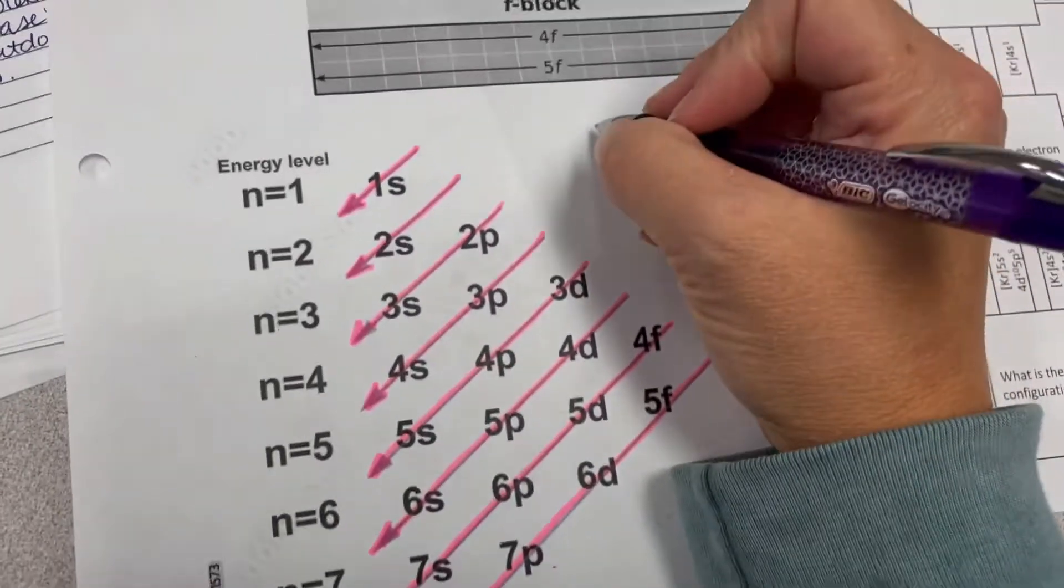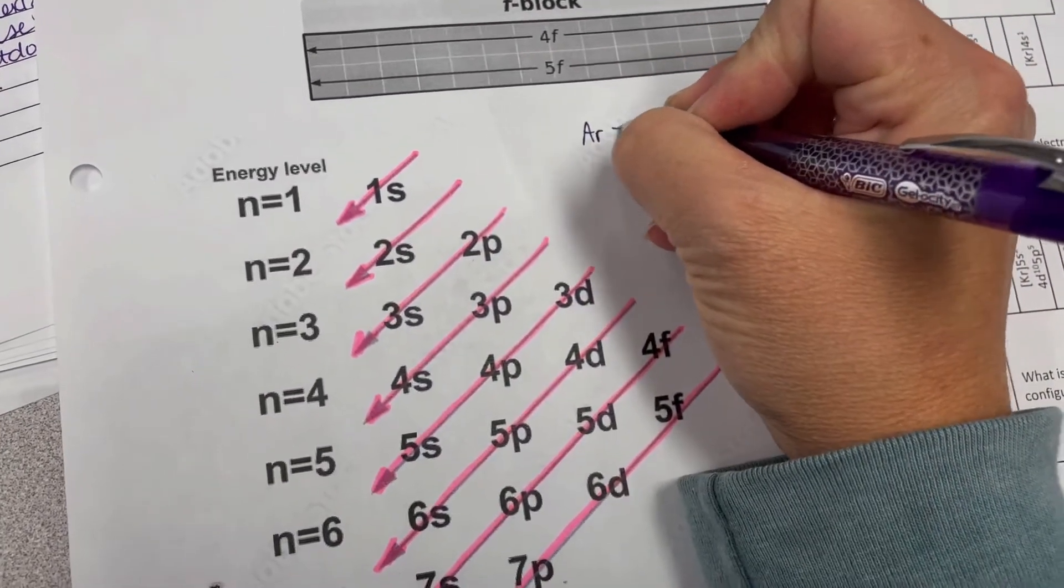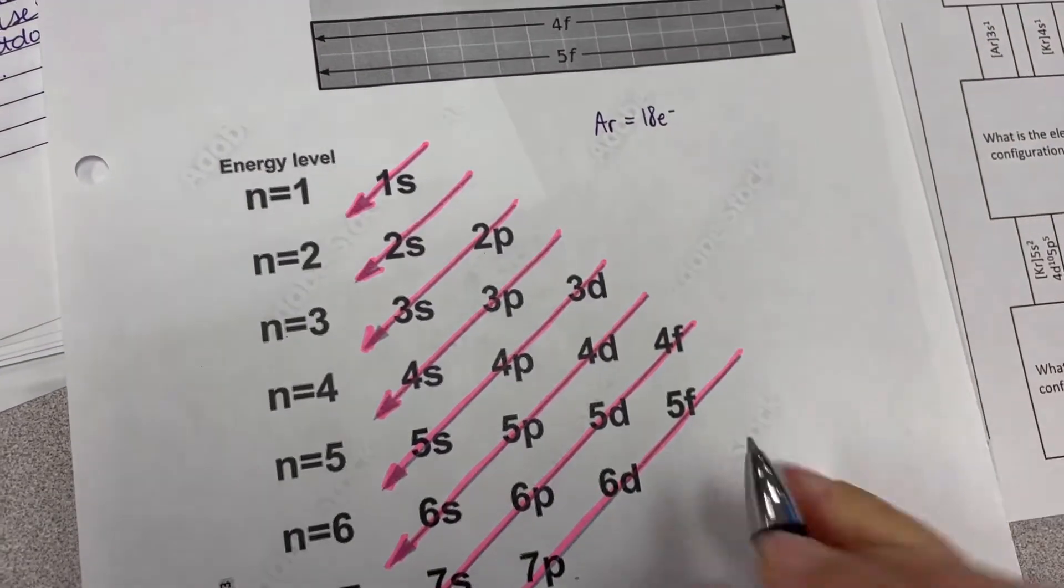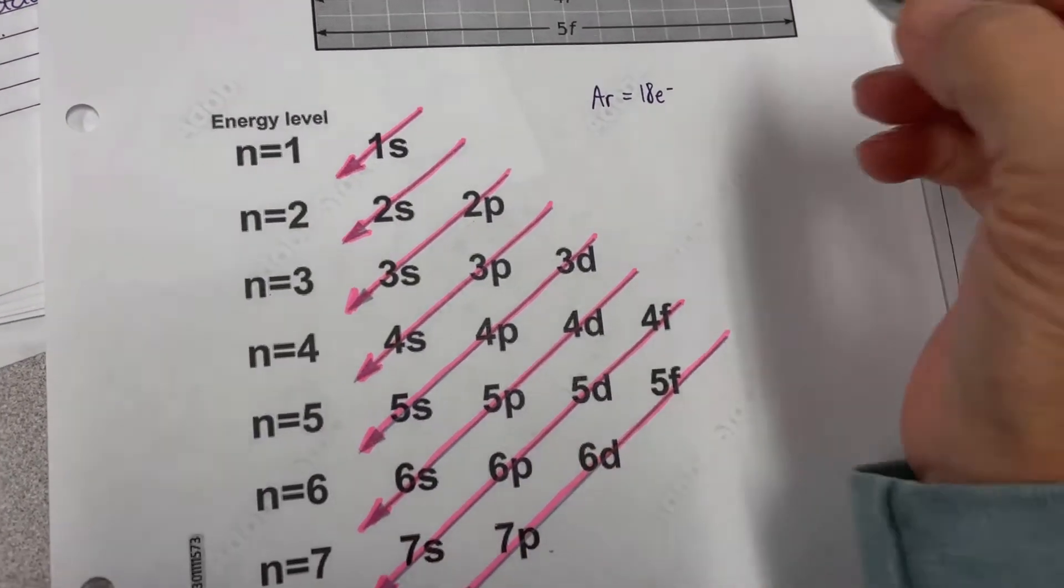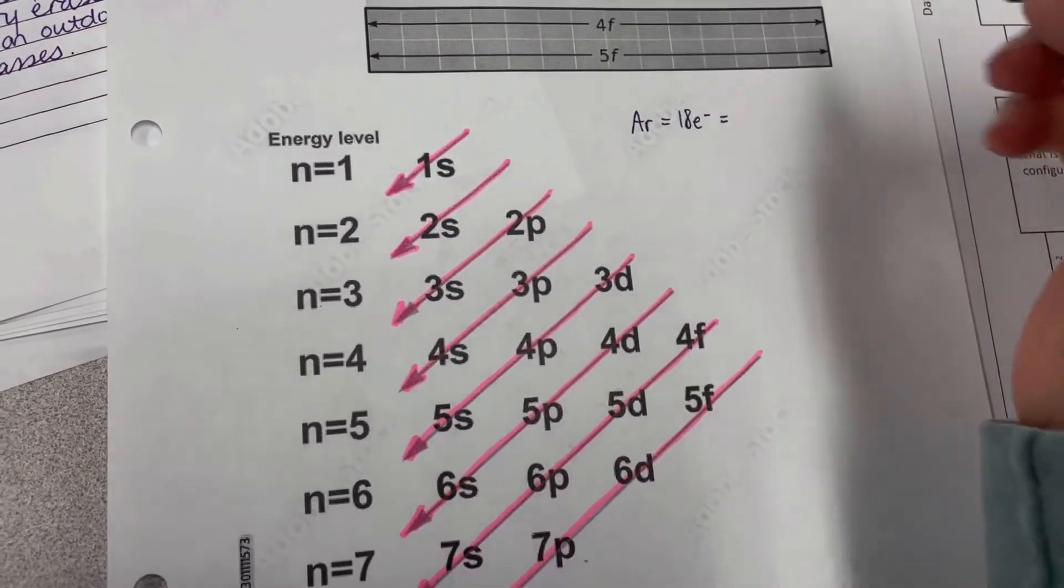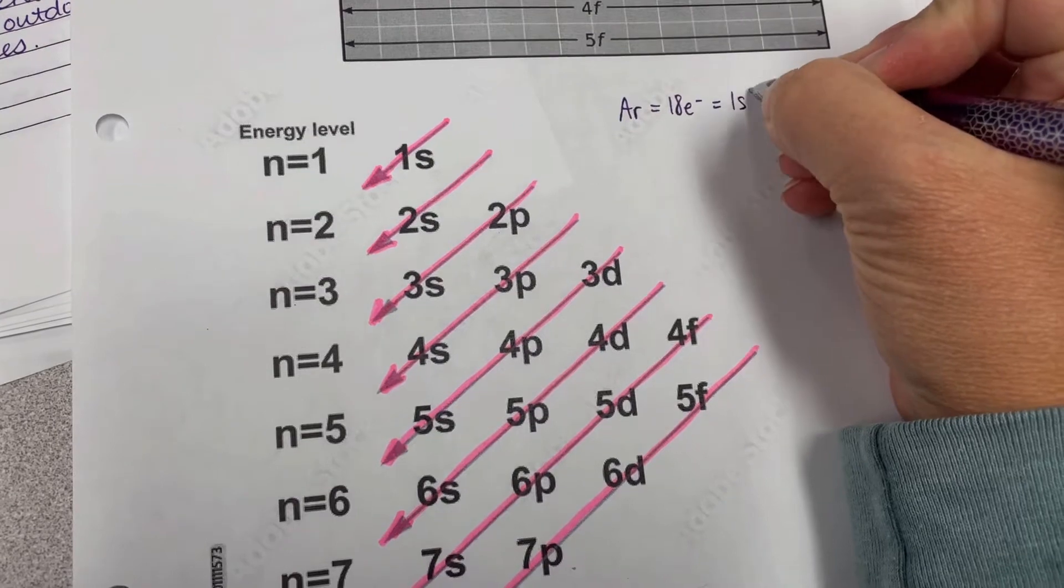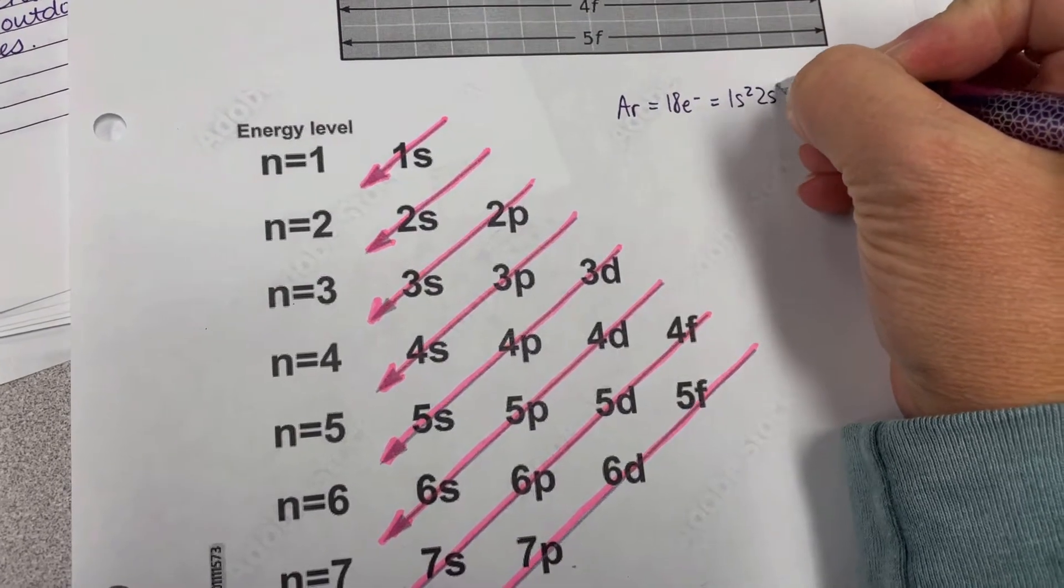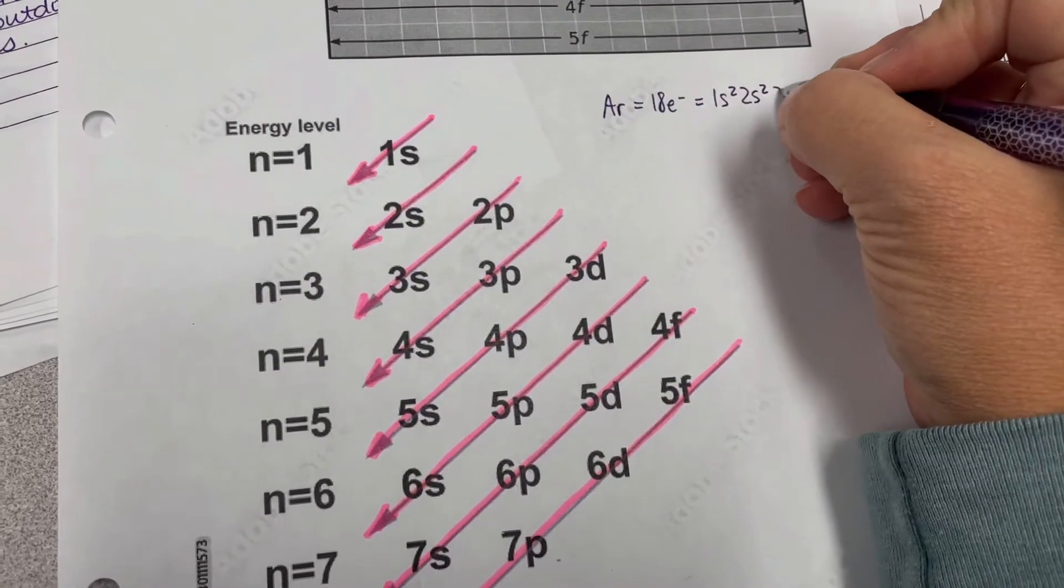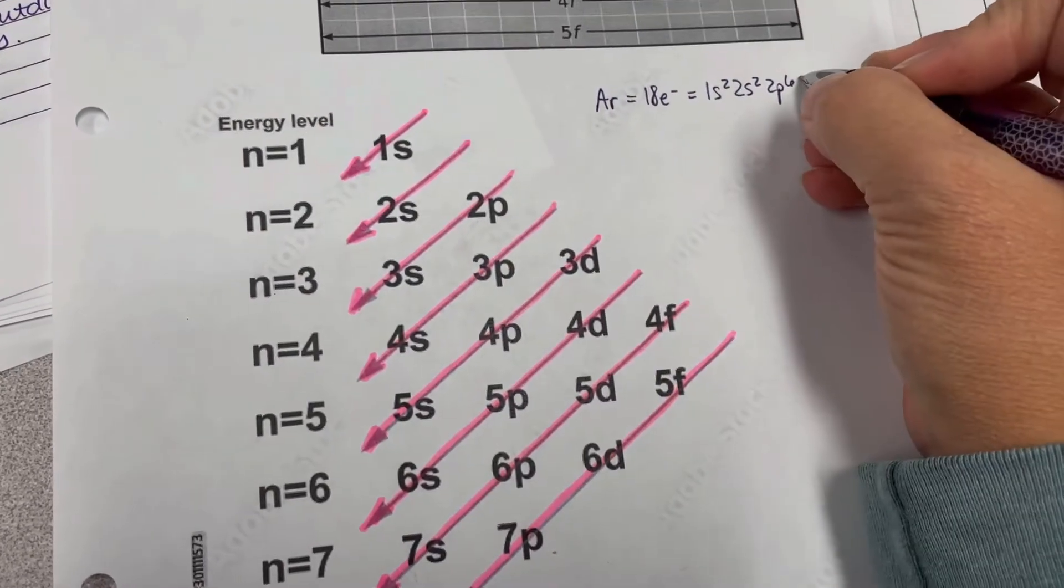So we know argon has 18 electrons, right? Because its atomic number is 18. And so I know that if I'm going to follow my chart here in order to fill this in, we're going to start with 1s2, 2s2. Notice I'm going to the next arrow. So we're 2p6, 3s2.